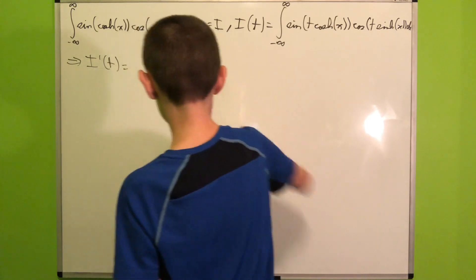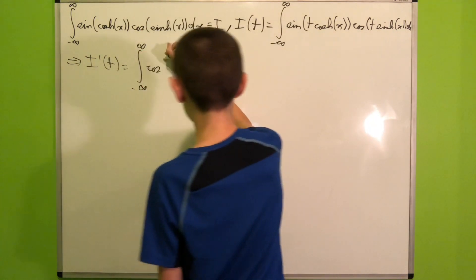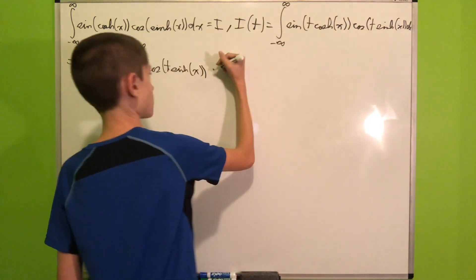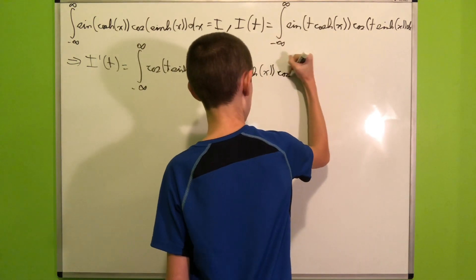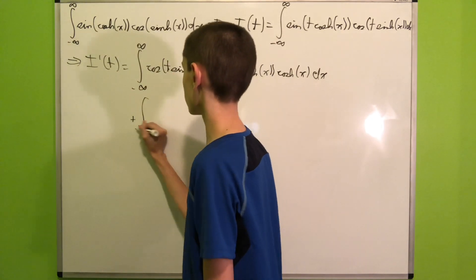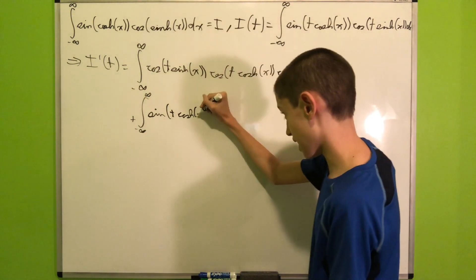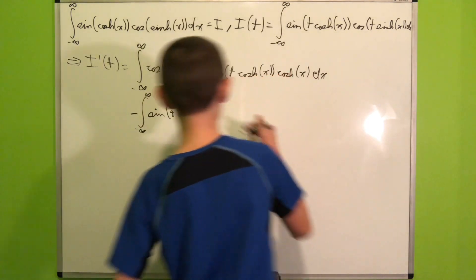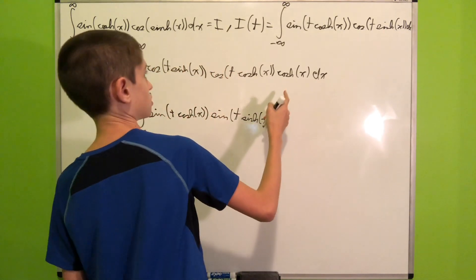So I'(t) equals: first, the integral of cosine of t·sinh(x) times cosine of t·cosh(x) times cosh(x) dx — using the chain rule on the first factor — plus the integral of sine of t·cosh(x) times negative sine of t·sinh(x) times sinh(x) dx — since the derivative of cosine is negative sine.